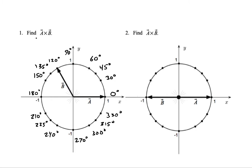We want to find what's called A cross B, and there are two methods for doing it. One difference between the dot product and the cross product is that the dot product outputs a scalar — a single number — for every dot product. But the cross product outputs a vector, which makes it substantially more complicated than the dot product.